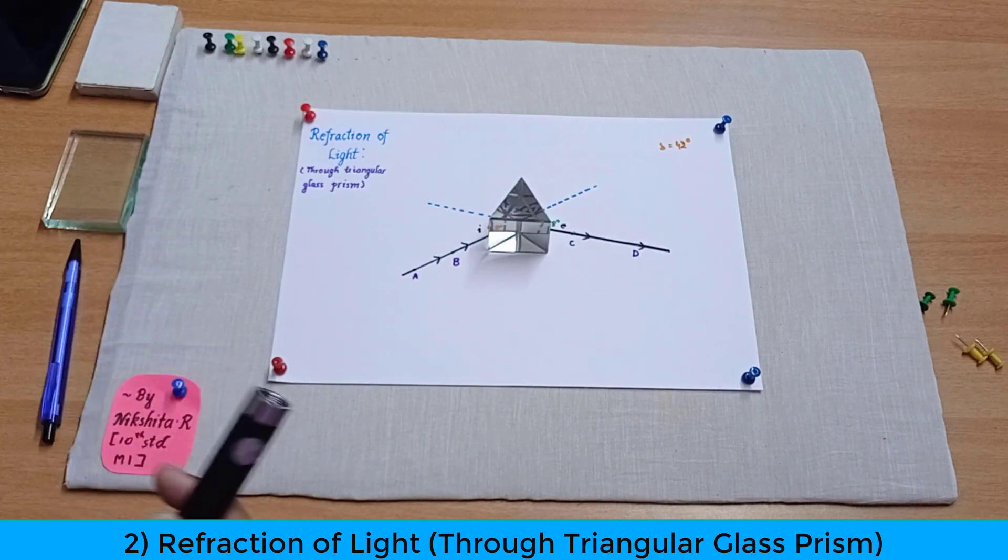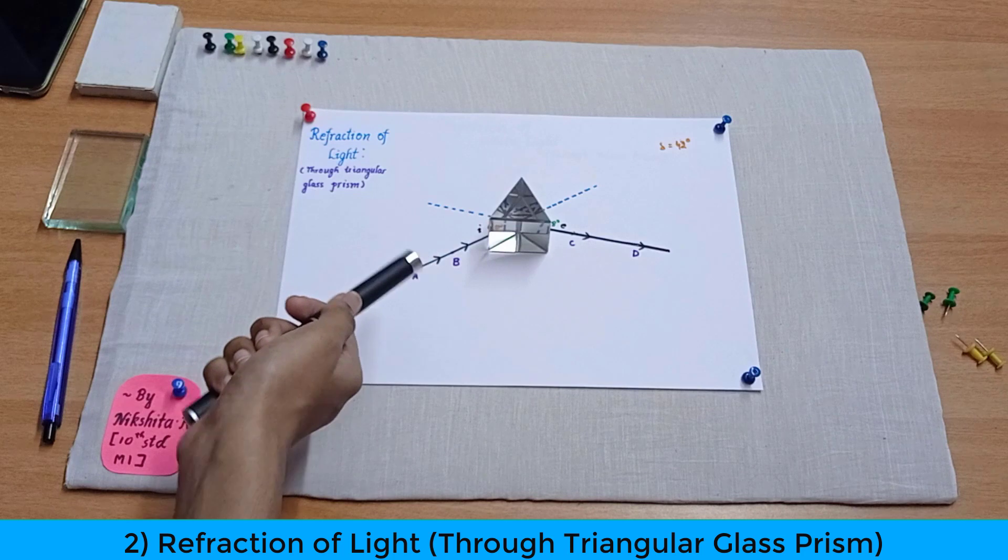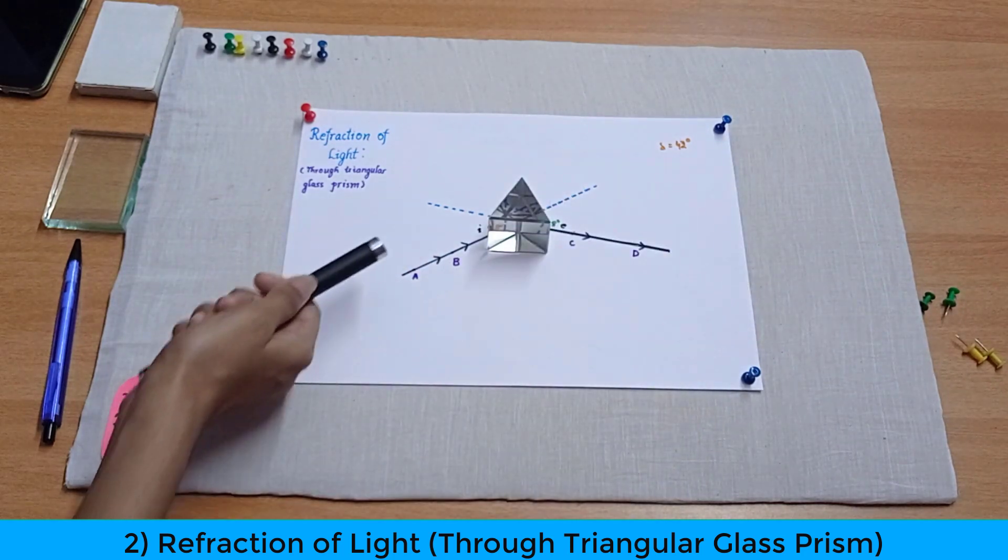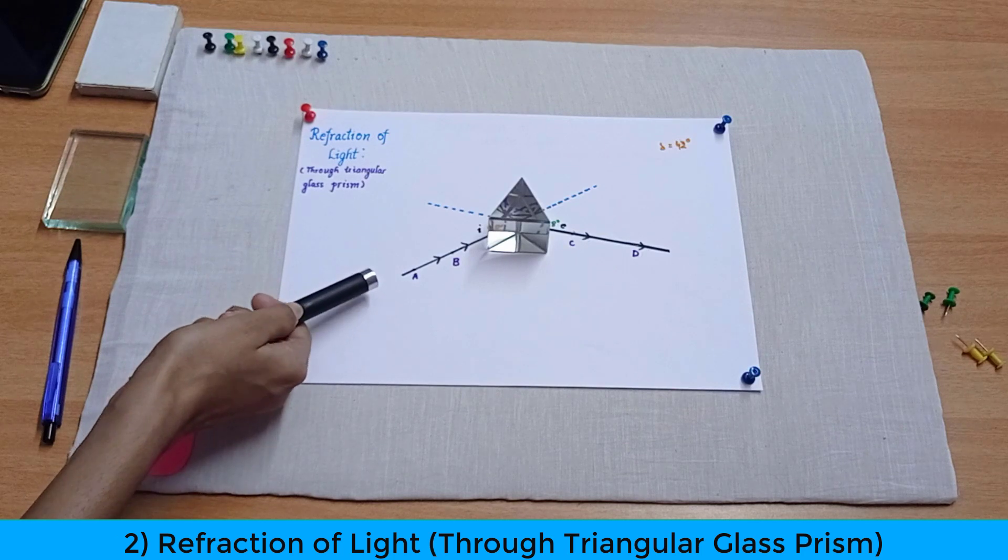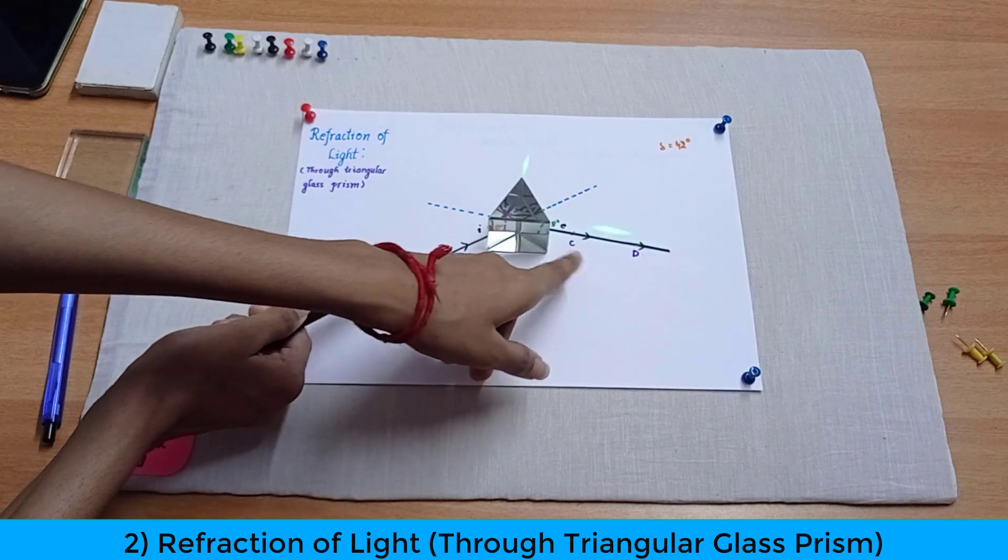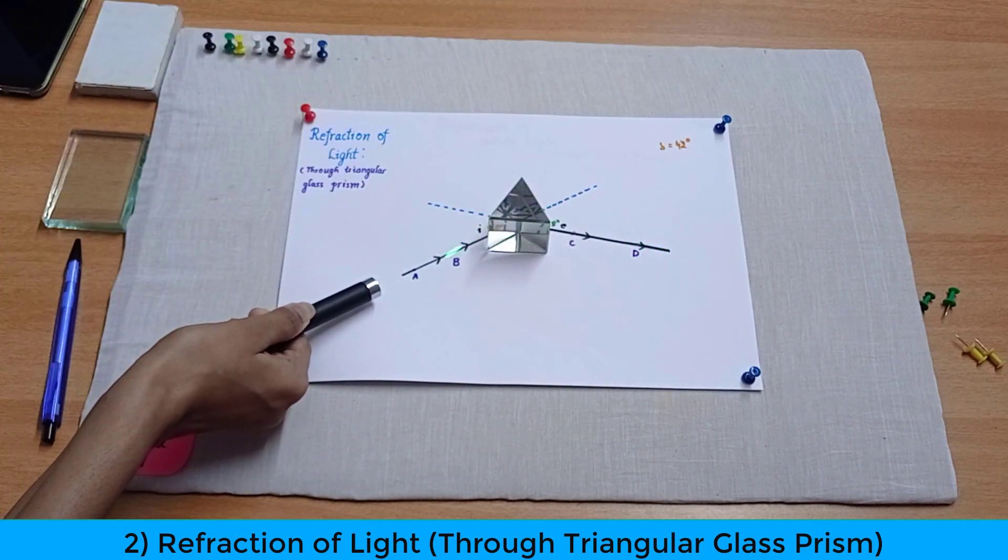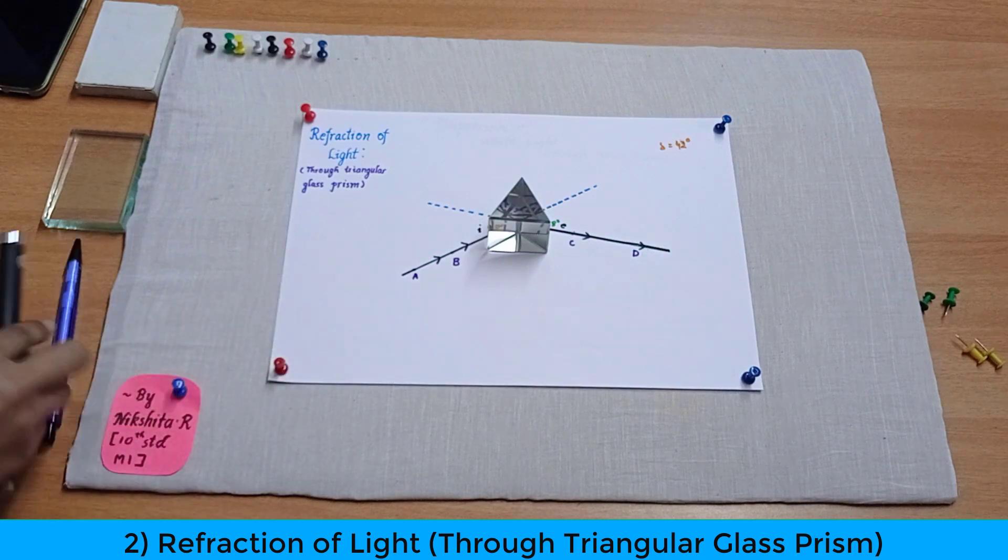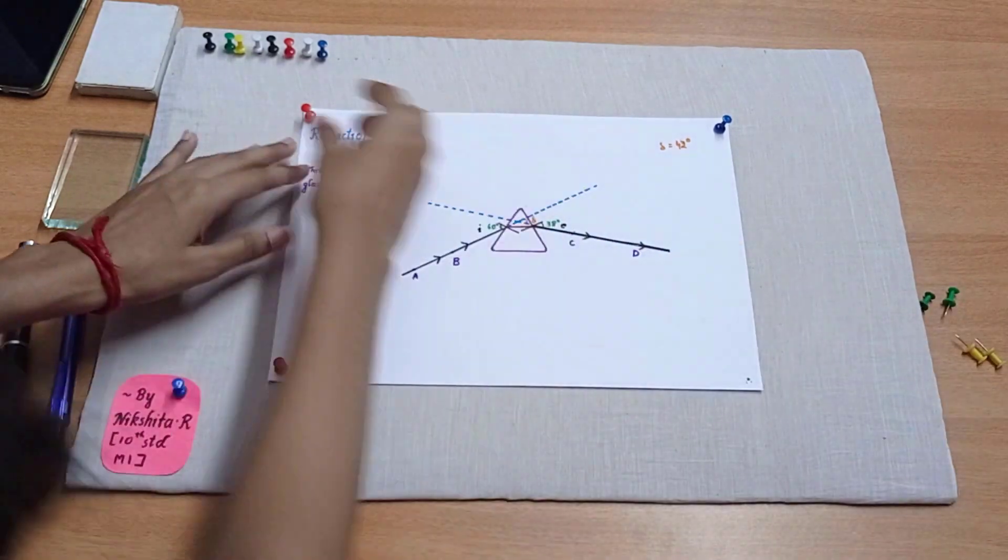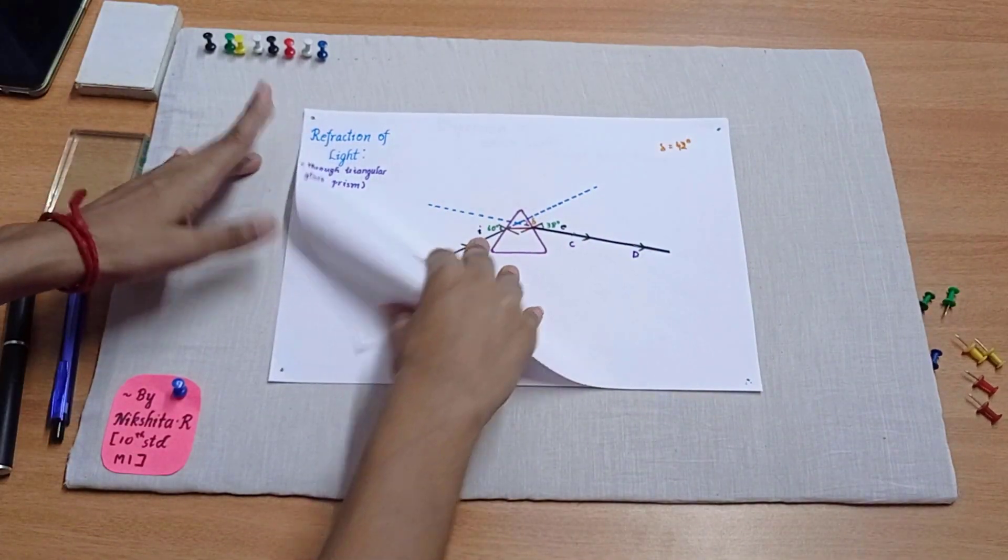I'll take the glass prism back and I'll take the laser light over here and I'll just give the incident ray over here. And you see how beautifully it emerges from this side and not like that. As you can see it's coming from this side and now it's not going straightly like this. So that's how we can simply easily and beautifully illustrate how the light behaves when it passes through a prism.